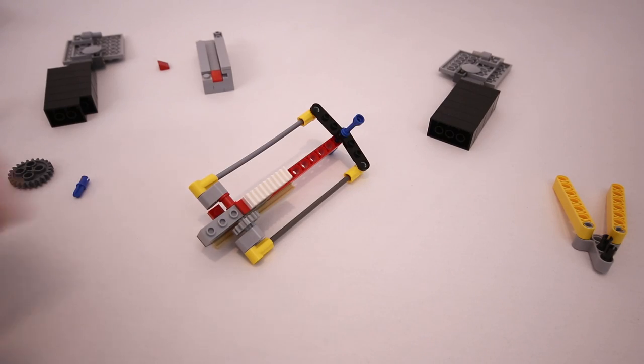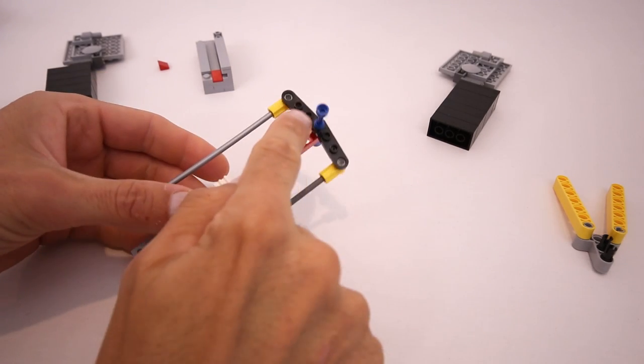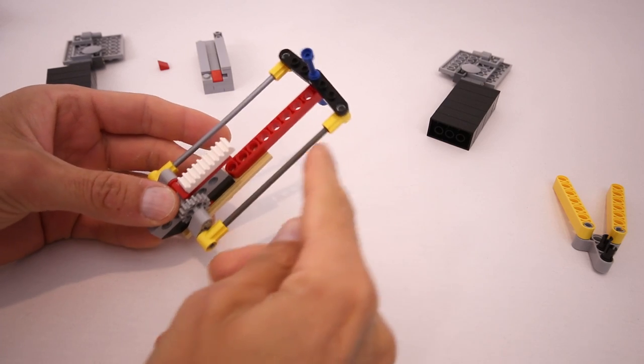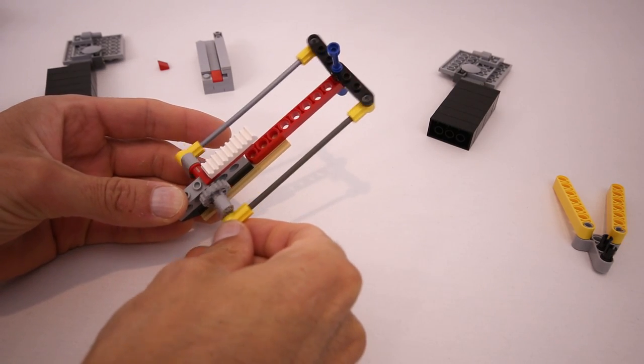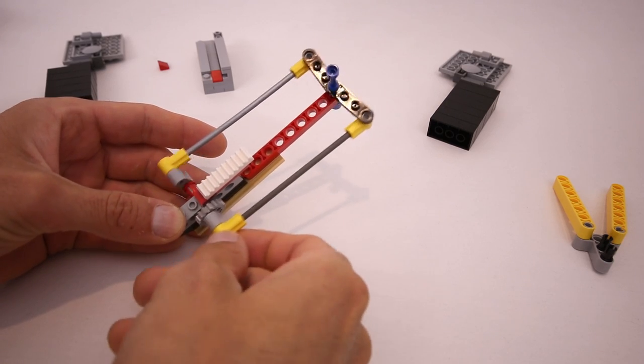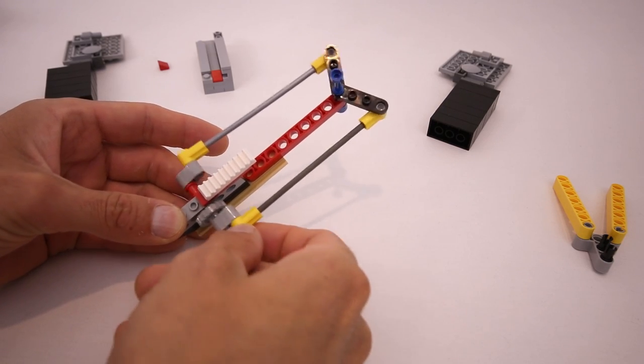We'll start by looking at the main support for the dragonfly. Here are the dragonfly's wings, and they are connected to this crankshaft at the base of the support, so that as the crankshaft rotates the dragonfly's wings flap up and down.